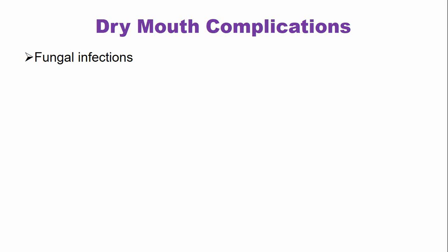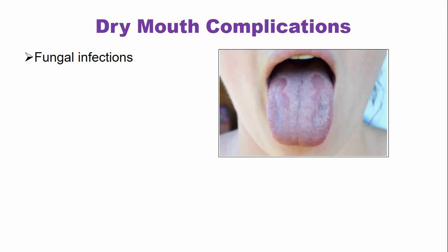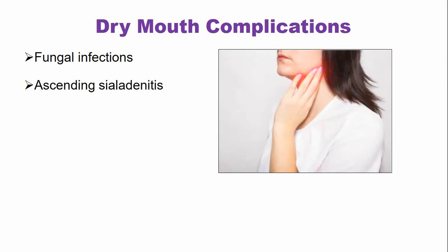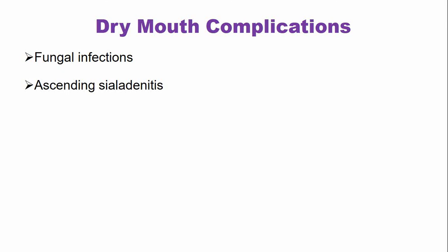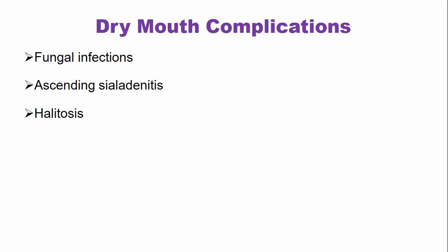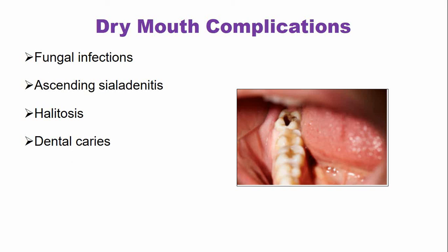What are the complications that can be seen in patients with dry mouth? Patients with dry mouth commonly suffer from fungal infections, and the most common fungus that infects the oral cavity is Candida albicans. Sometimes there is infection and inflammation of the salivary glands during reduced flow of saliva, called ascending sialadenitis, meaning the infection spreads from the duct towards the cells and parenchyma of the gland. There is also halitosis or bad breath because residual food is not cleared and there is more growth of bacteria and other microbes. Patients with dry mouth are also more prone to dental caries because the protective effect of saliva is lost.